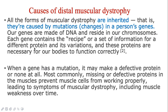The primary cause of distal muscular dystrophy is mutations in the genes responsible for producing proteins in muscle cells. When a gene is mutated, it either makes a defective protein or none at all. If a protein is defective or missing, this prevents muscle cells from working properly, leading to the signs and symptoms of muscular dystrophy, namely muscle weakness over time.